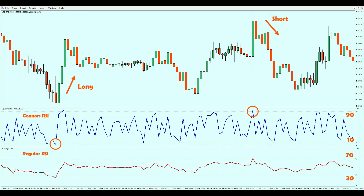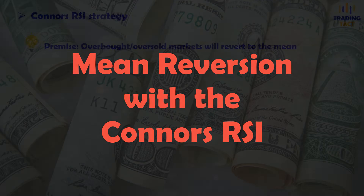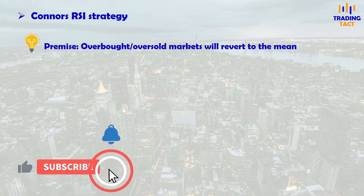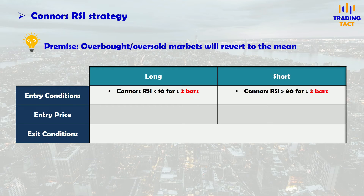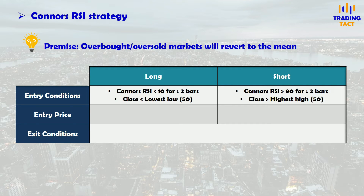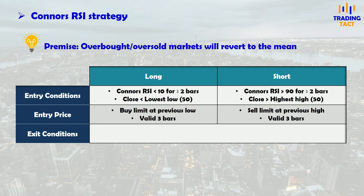Let's use this to program a complete mean reversion strategy. I am betting that short-term overbought or oversold conditions will revert to the mean. For longs, I am looking for the Connors RSI to fall below 10 for at least two consecutive bars. Given how volatile this RSI is, this two-bar condition is a great way to reduce the number of false signals. I will add in a 50-period Donchian breakout condition, meaning I will only go long if the current close is below the lowest low over the last 50 periods — another indication of an oversold market. If the above conditions are met, I will place a limit order at the previous low, valid for three bars. Trade management will be a simple 60-pip profit target and stop loss.